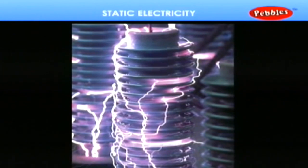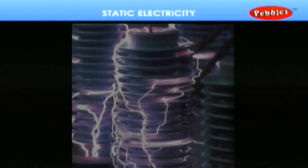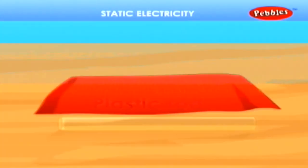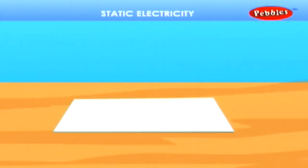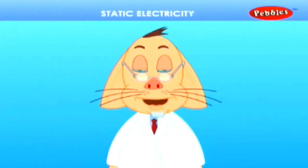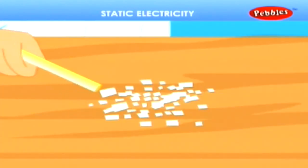To reveal static electricity, let us do a simple experiment. Take a plastic rod, woolen cloth and a paper. Cut the paper into small pieces. Take the plastic rod and bring it near the small pieces of paper. What does happen? Just nothing.